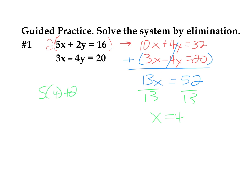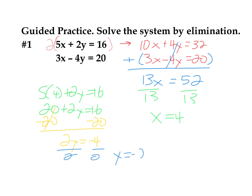I'm going to have 5 times 4 plus 2y equals 16. That's 20 plus 2y equals 16. I can subtract 20 on both sides, giving me 2y equals negative 4. When I divide both sides by 2, I get y equals negative 2. So my solution is the ordered pair 4 comma negative 2. That's the only ordered pair that solves both equations in the system. We could verify by plugging 4 in for x and negative 2 in for y into both equations to confirm they're both true.